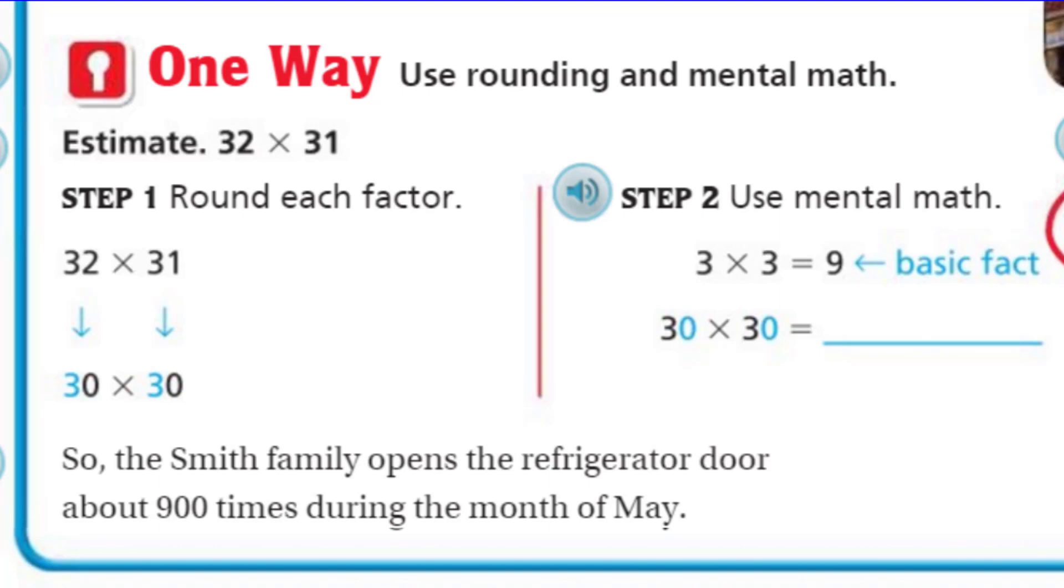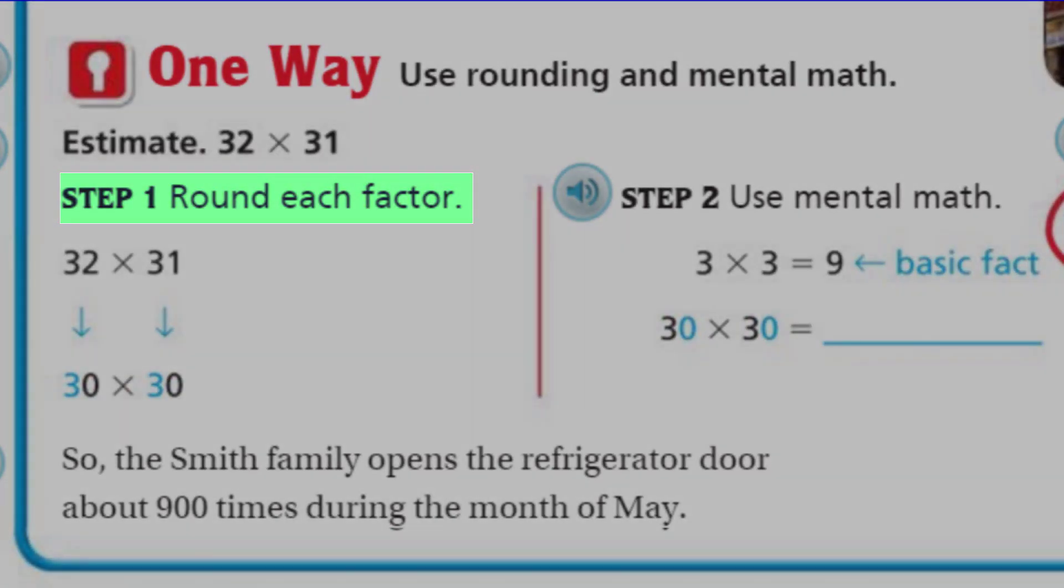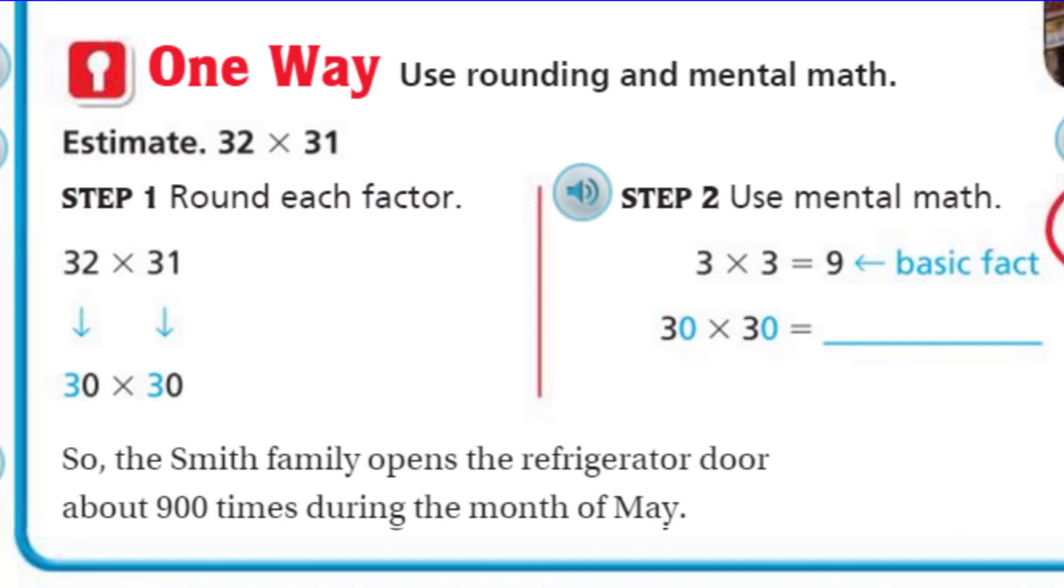We can use rounding and mental math. Let's take a look what the rounding is. It says here we can round each factor. So, here we have 32 times 31. If we were to try to do this in our head, it would be kind of hard. But, what we could do is we could just round each factor to 30. Hence we have our 30 times 30. Now, we go to step two. It says use mental math.